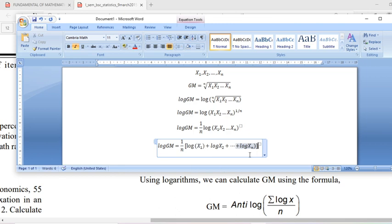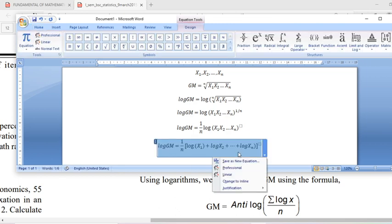Log of x1 plus log of x2 plus dot dot dot plus log of xn. So one by n is taken outside. This can be again simplified.